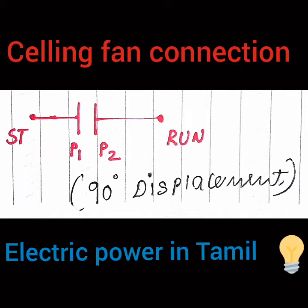When we use a capacitor, it provides a 90-degree phase displacement. The capacitor has two terminals. The ceiling fan has two coils — the starting coil and the running coil. Basically, single-phase supply gives 180-degree conduction. To make the fan self-starting, we need 90-degree displacement, which the capacitor provides. That is why we use a capacitor in the ceiling fan — without it, the motor is not self-starting.